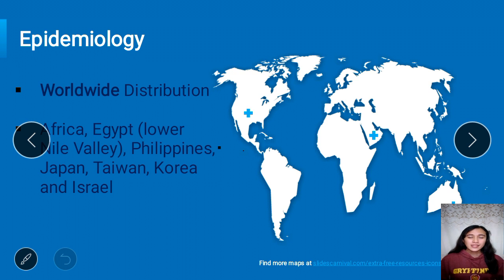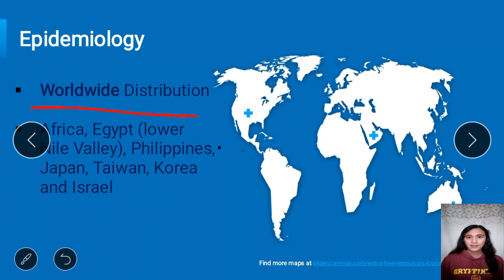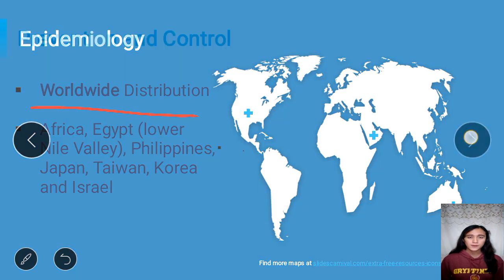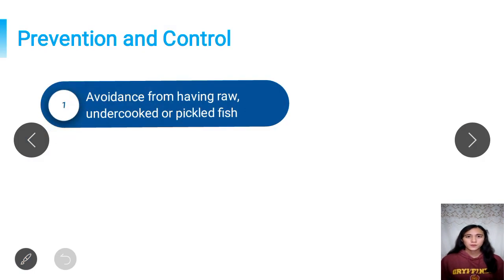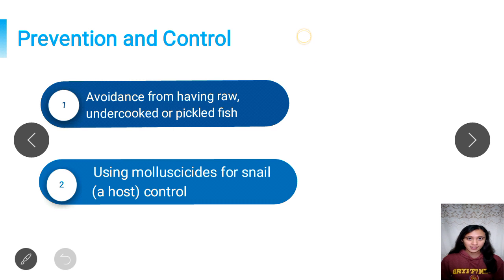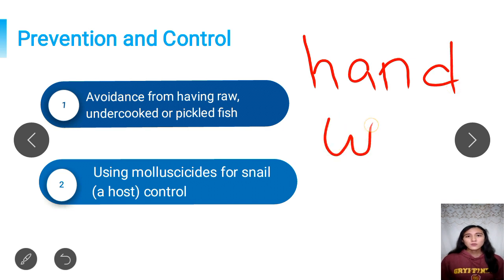Heterophaisis has a worldwide distribution due to the fact that it has adapted to various families of snails and is not very specific in its second intermediate host. However, it is prevalent in certain countries including Africa, Egypt, the Philippines, Japan, Taiwan, Korea, and Israel — countries that practice ingesting raw or undercooked fish such as kinilaw and sushi. For prevention and control, avoidance of raw or undercooked fish is still the best method. Additionally, using molluscicides for snail control may be employed, and handwashing after handling fish can stop transmission of the parasite.